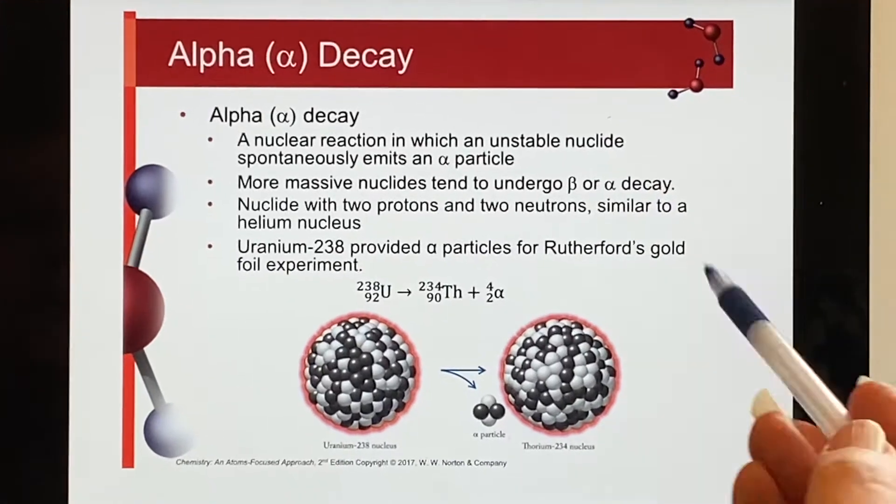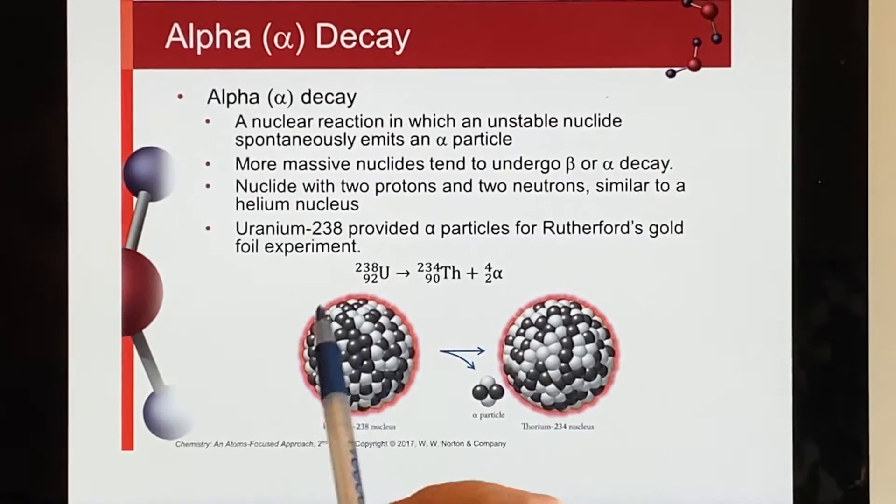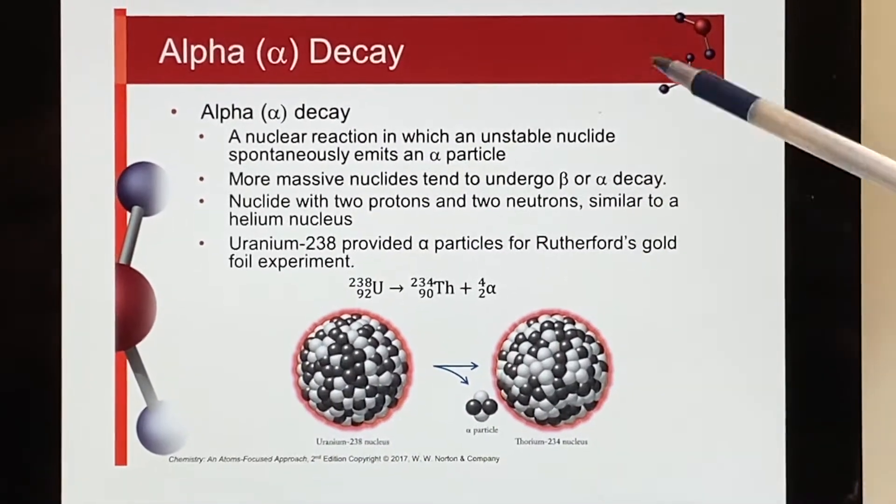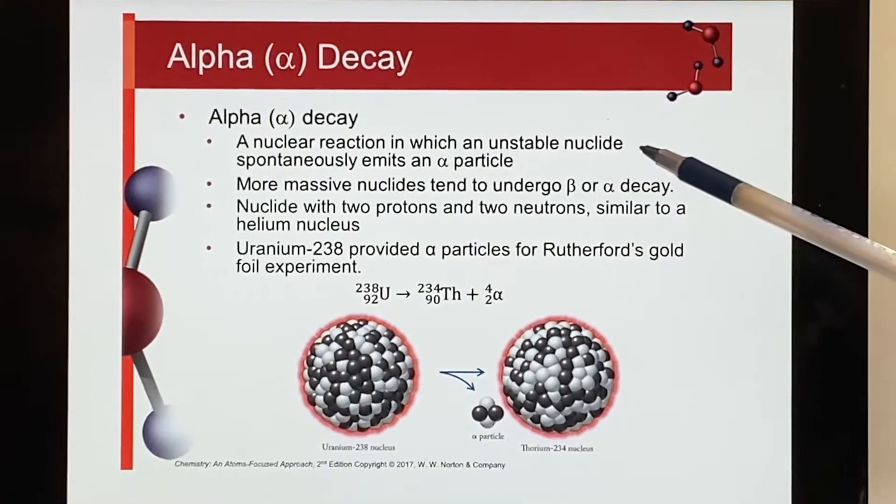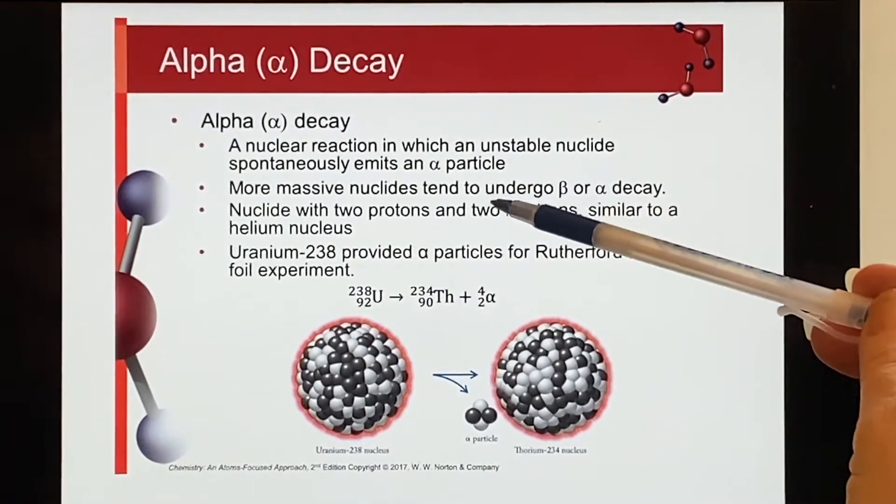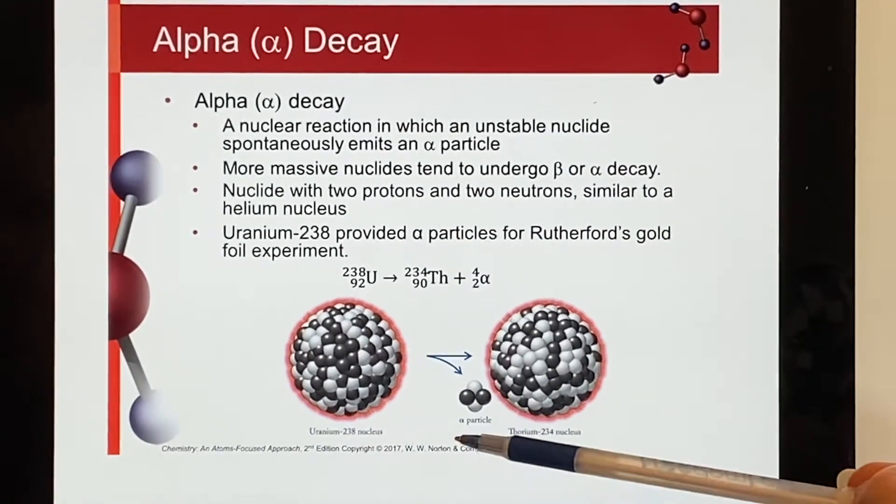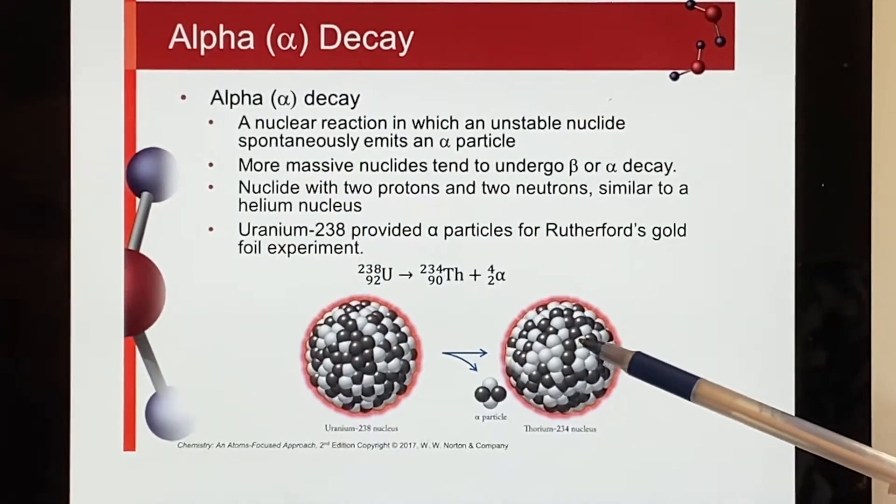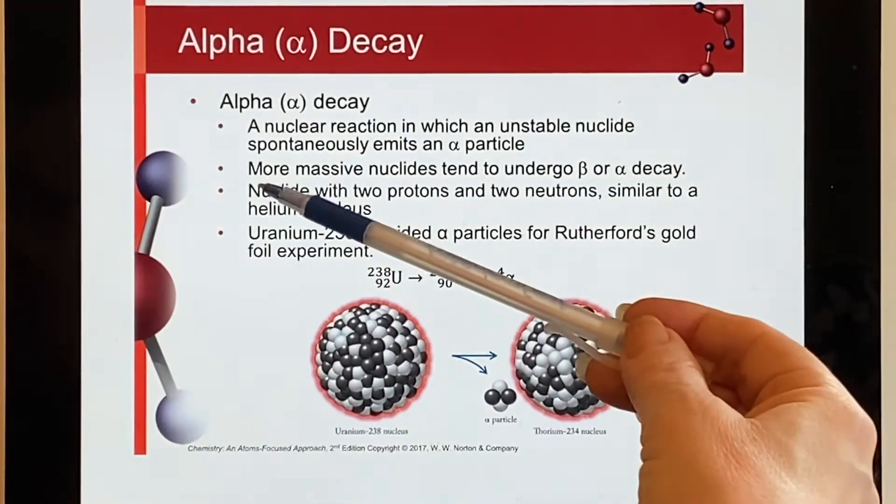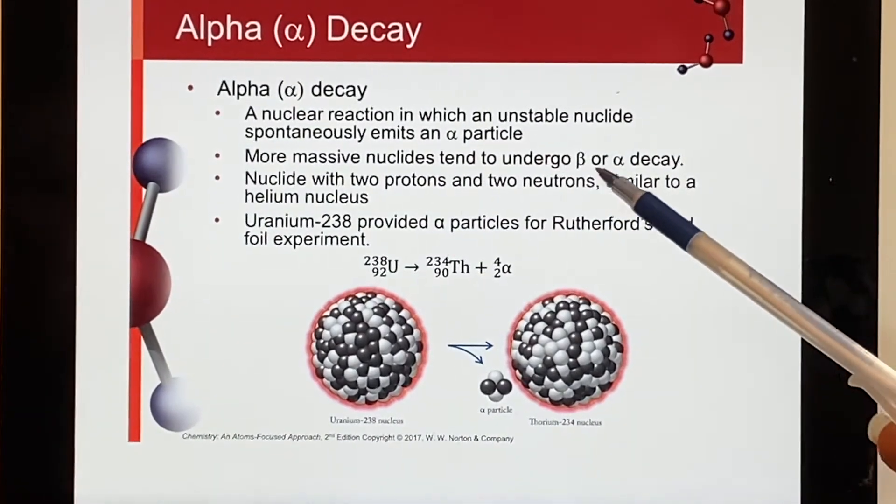An alpha decay—notice here they're going to a much heavier situation. These are huge, right? So an alpha decay is another situation where an unstable nuclide spontaneously falls apart, and when it does it falls apart into two parts: an alpha particle and a new element.